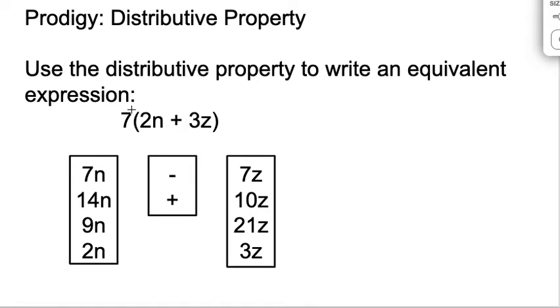We just kind of think through it. We're going to remember our area model, we just multiply each thing. So we take 7 times 2n and that would give us 14n, and then 7 times 3z.